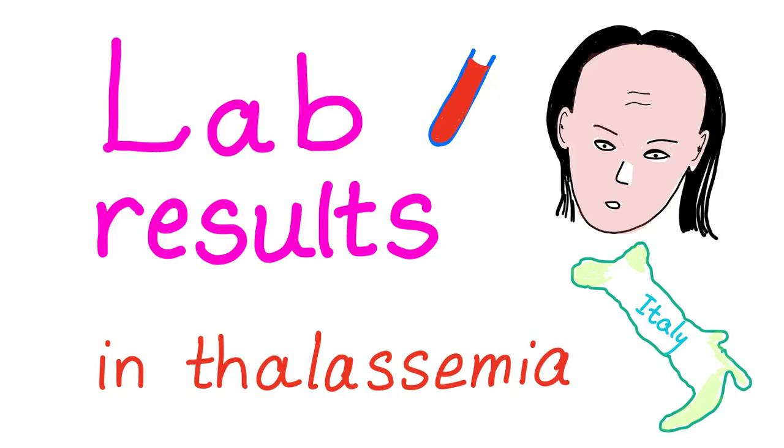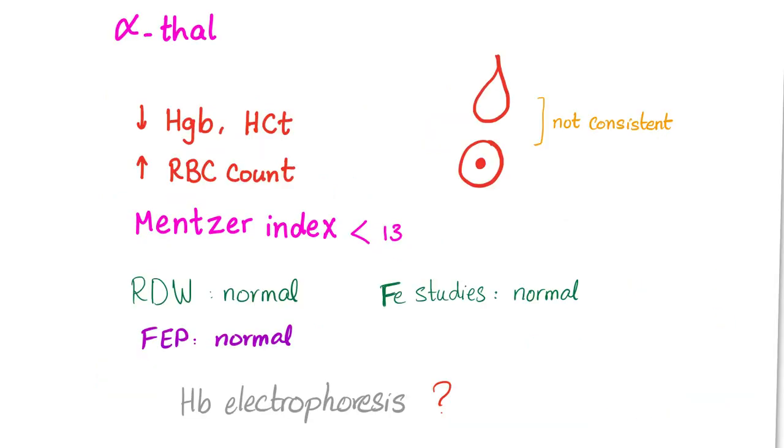Let's talk about lab results in thalassemia. As you know, thalassemia is a type of anemia - tired, pale, exercise intolerant. Thalassemia is common in Italy and Greece. Thalassus is sea - the Mediterranean Sea.